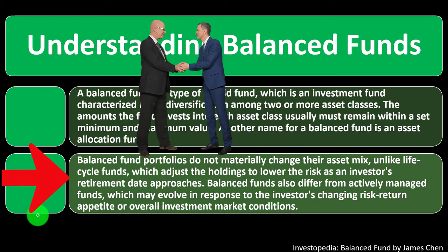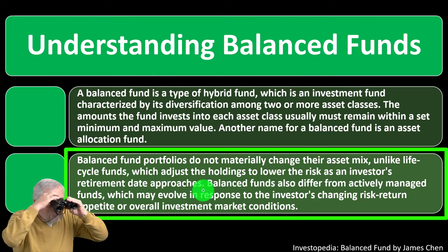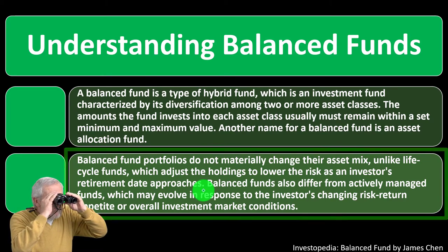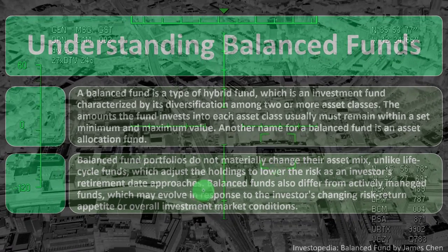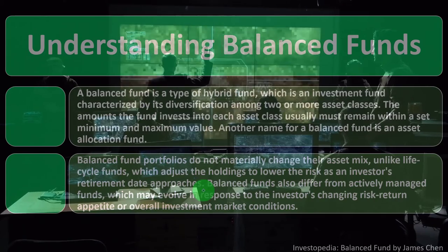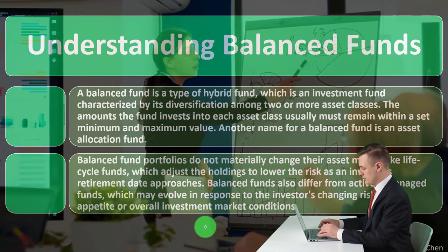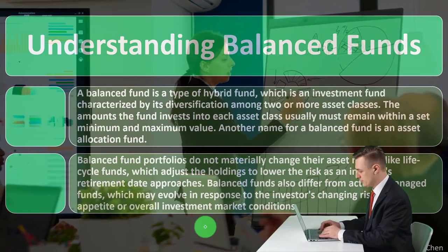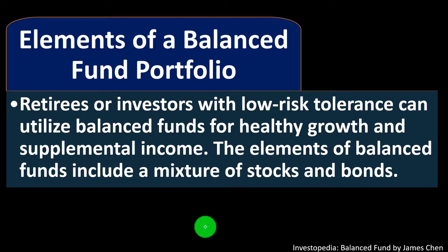Balanced fund portfolios do not materially change their asset mix, unlike life cycle funds, which adjust holdings to lower risk as an investor's retirement date approaches. When looking at different funds, consider whether you want a fixed allocation or a targeted goal where allocation changes as you approach a target. From a general theory standpoint, you take into consideration your time horizon and risk tolerance to determine the appropriate mix. Balanced funds also differ from actively managed funds, which may vary in response to changing risk-return appetite or market conditions. You should also consider whether the fund is index-based, reducing active management costs.